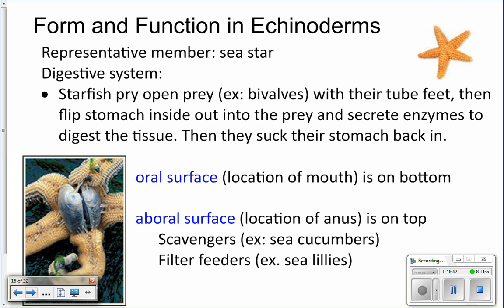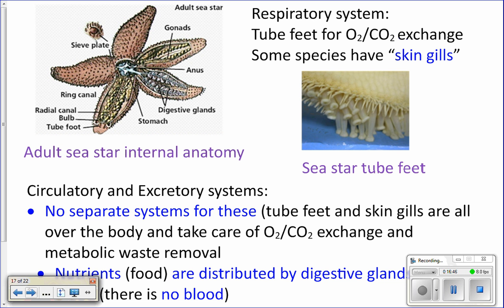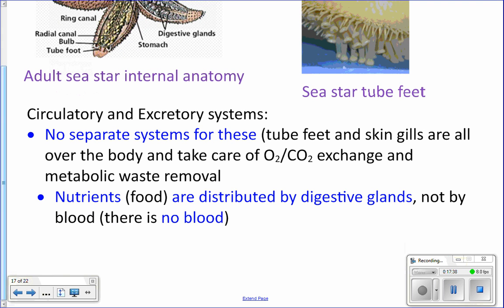The respiratory system: sea stars have skin gills — small projections on the skin surface — which you'll be able to see under the microscope during dissection. However, most gas exchange actually occurs across the surface of the tube feet. The tube feet run down the center of each arm and are the primary site for taking in oxygen and expelling carbon dioxide.